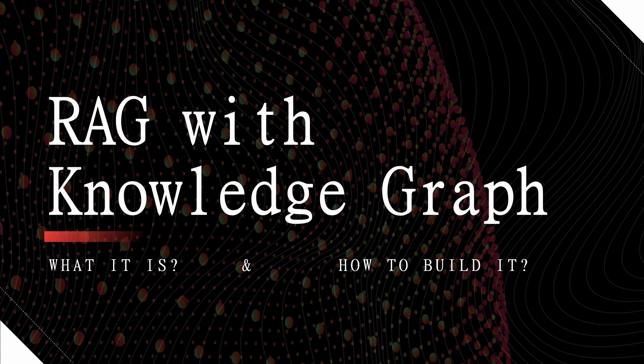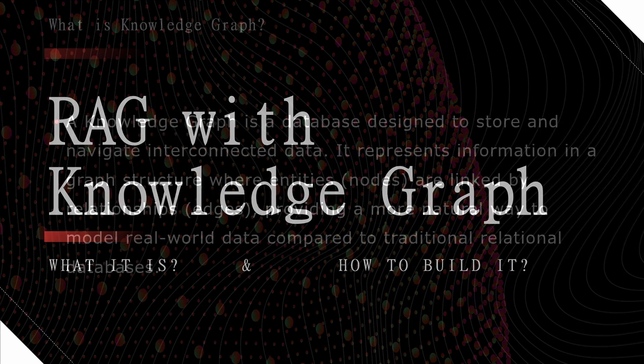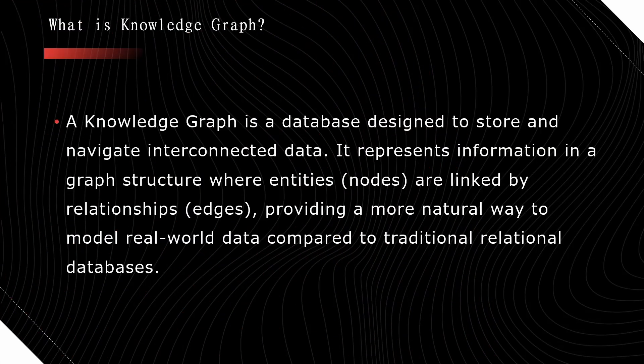First we will learn what exactly is a knowledge graph, and every terminology used in the knowledge graph I will try to explain. A knowledge graph is a database. The basic idea of the knowledge graph is to store the data into nodes and edges, where nodes represent entities and edges represent relationships between them.